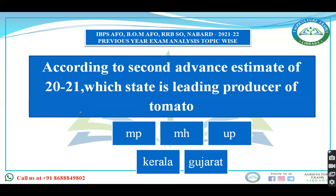According to the second advance estimate of 2020-21, which state is the leading producer of tomato — Madhya Pradesh, Maharashtra, UP, Kerala, or Gujarat? For tomato, the leading state is Madhya Pradesh. Maharashtra leads for onion. UP leads for overall food grains, sugarcane, peas, and masoor (lentils).